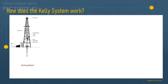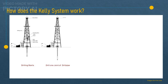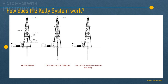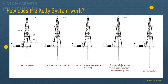As we drill deeper, we need to add more pipes to extend the drill string. To do this, we have to stop rotating, lift up the drill string until only one joint or length of pipe is above the rotary table, unscrew it from the rest of the drill string, and lower it down and set it aside on a rack. Then we take another joint of pipe from a rack, screw it onto the top of the drill string, lower it down until only one joint is above the rotary table again, screw it onto the Kelly, and resume rotating.